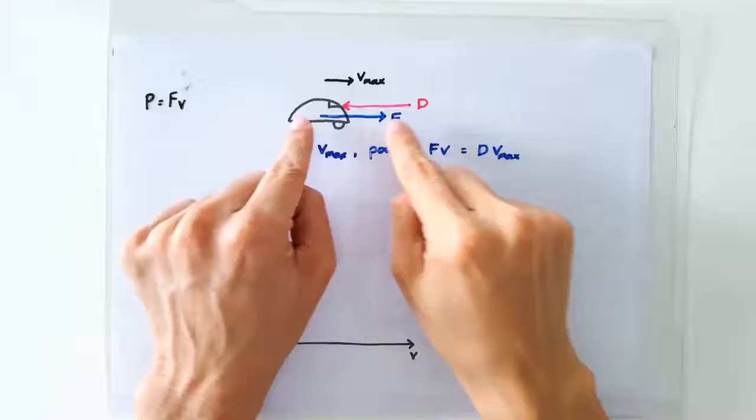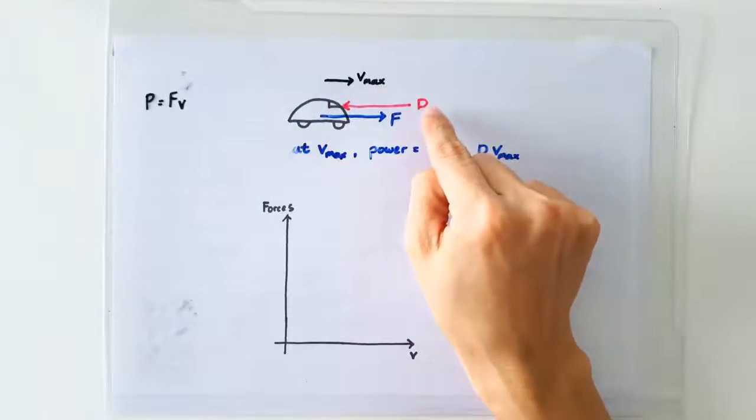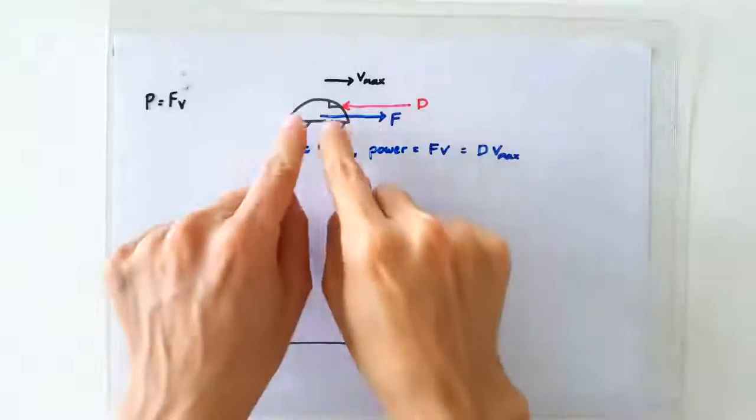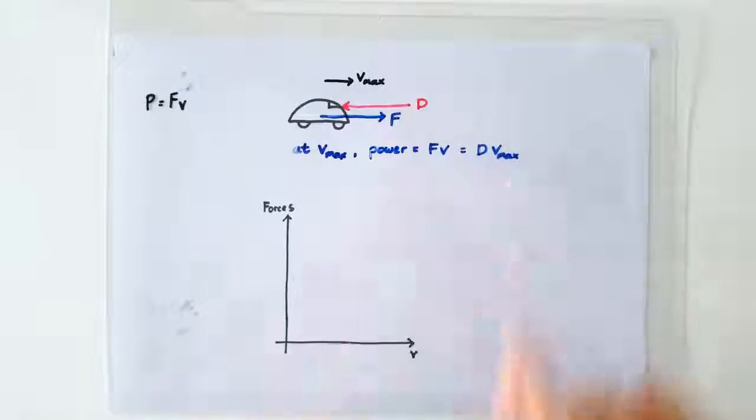In other words, to keep this car going at a constant speed of V max against a drag force of D, the engine of the car must deliver power at a rate of D times V max.